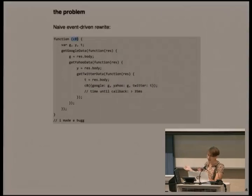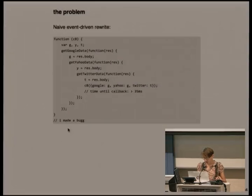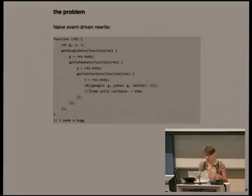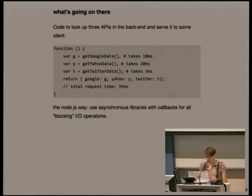This is supposed to solve the problem that in a single-threaded process, while you're doing each of these things, nothing else can happen — no other requests can be accepted. But the time until the callback is called is still 35 milliseconds. I've read the source of lots of Node.js applications and libraries, and this is extremely common. They say 'this stops you from blocking so everything will be faster,' but in terms of the response time of this handler, it's identical — actually slightly slower because you're yielding to a scheduler every time.